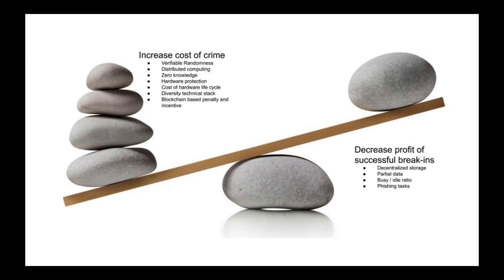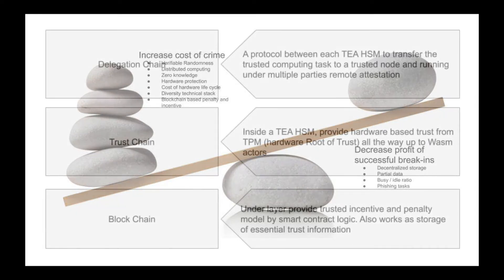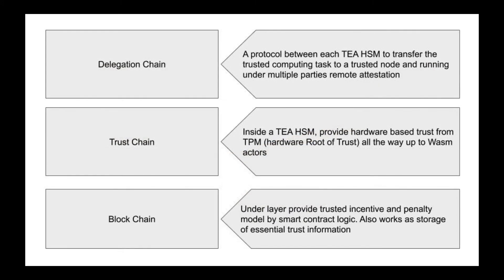The risk, cost, and benefit are not predictable — this can largely suppress the attacker's motivation. We have grouped our technologies into three categories made up of three chains: the first is the blockchain, then the trust chain, and the last is the delegation chain.